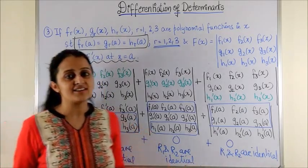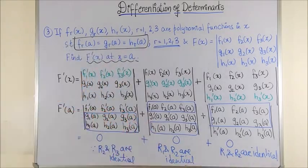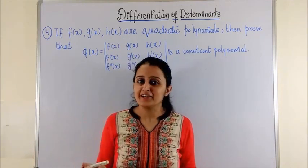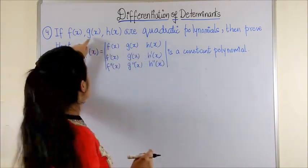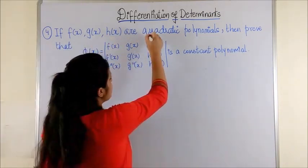Now if you recollect the very famous result of determinants which says if any two rows or any two columns in a determinant are identical, then value of the determinant becomes zero. Applying the same logic to each of these, your final answer is just zero. Here is another interesting question: if you are given f(x), g(x), and h(x) are quadratic polynomials...